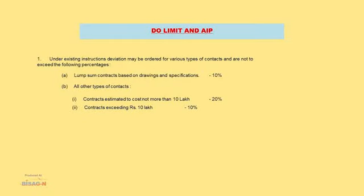Under existing instructions, deviations may be ordered on various types of contracts and are not to exceed the following percentages: for lump sum contract based on drawing and specification — 10%; for other types of contract — contract estimated to cost not more than 10 lakhs: 20%; contract exceeding rupees 10 lakhs: 10%.